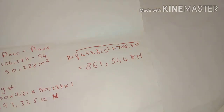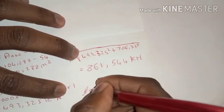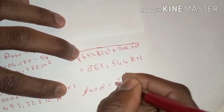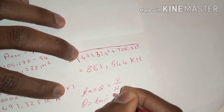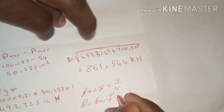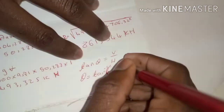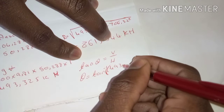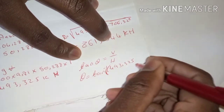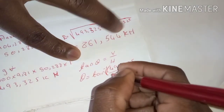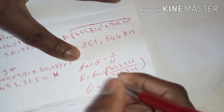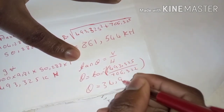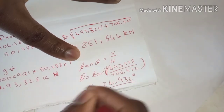We calculate the angle of inclination using tan θ = V/H. So θ = arctan(493.325 / 706.322) = 34.932 degrees. That is all that was asked of us in this exercise.